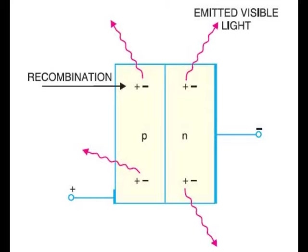In germanium and silicon diodes, almost the entire energy is given up in the form of heat and emitted light is insignificant. However, in materials like gallium arsenide, the number of photons of light energy is sufficient to produce quite intense visible light.